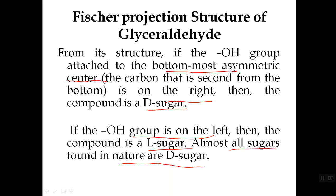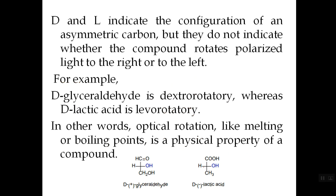In general, almost all the sugars found in nature are D-sugars, having the OH on the bottom-most chiral carbon on the right side. The capital D and capital L indicate the configuration of the asymmetric carbon — where the OH and H are positioned — but they do not indicate whether the compound rotates plane-polarized light to the right or to the left. Capital D and L should not be confused with the optical rotation of the molecule, which is represented by small d and small l.